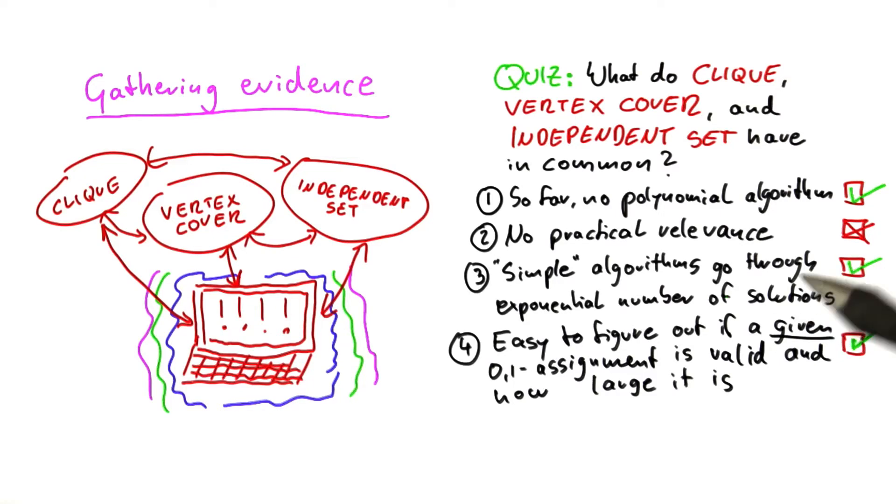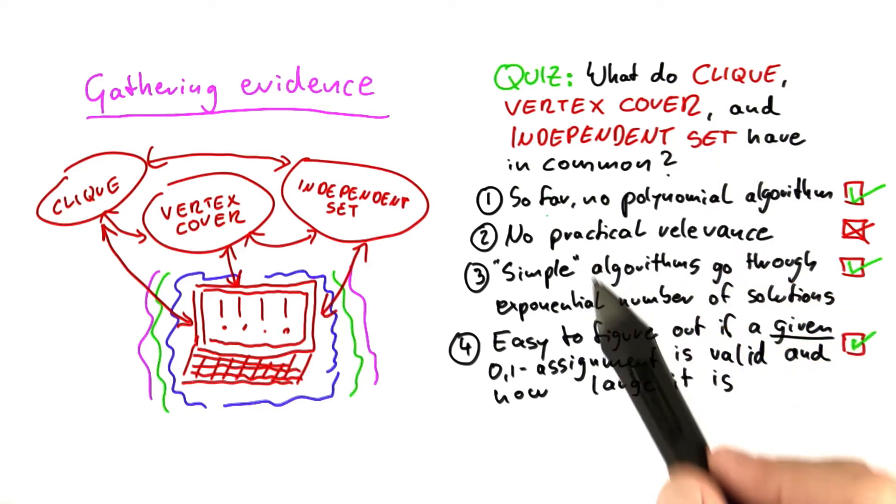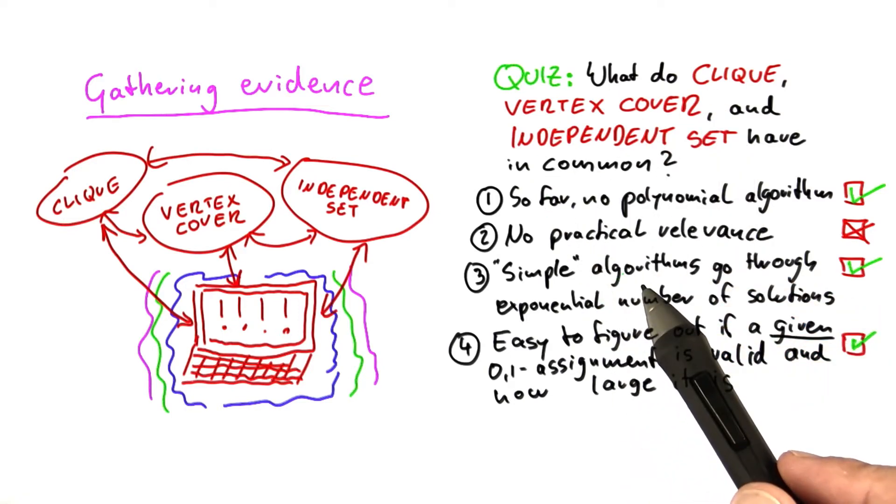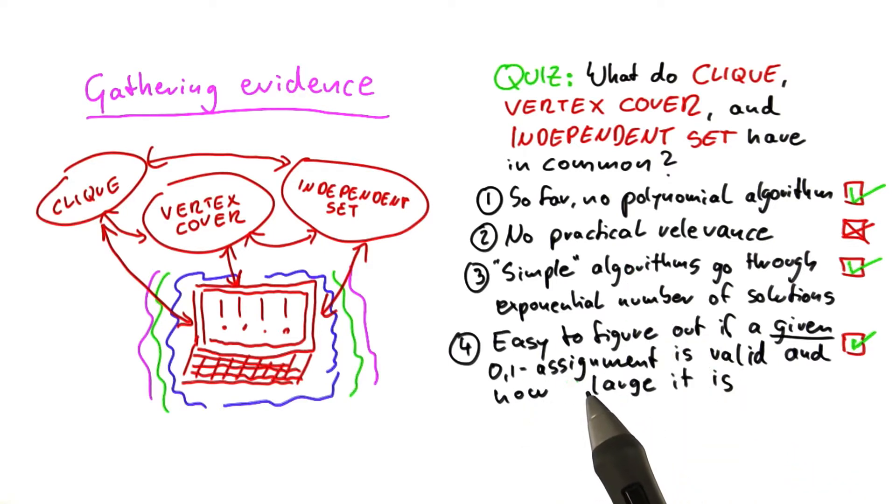So in the last unit, we talked about the simple algorithms for our three problems that have to go through an exponential number of solutions to try all possible assignments of 0 and 1 to the vertices.